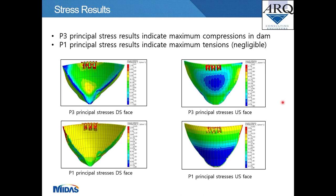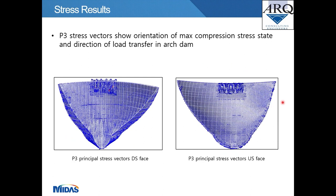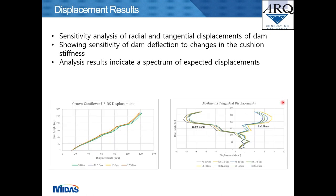The P3 and P1 principal stress results indicate maximum compression and tensions in the dam. P3 stresses on the upstream face are very similar to the arching stresses — confirming arching as the source of maximum compression. P3 stresses on the downstream face show a combination of arching on the top two-thirds and cantilevering along the toe toward the bottom third. P1 principal stresses show negligible tensions on both upstream and downstream faces. The P3 stress vectors show the orientation of maximum compression and direction of load transfer, transitioning from strict arching at the crest to cantilevering at the bottom third of the dam.